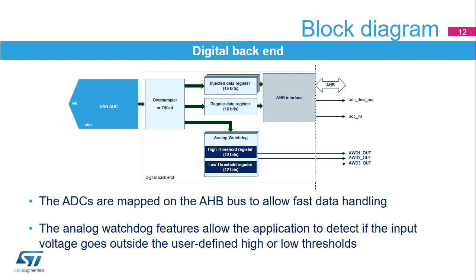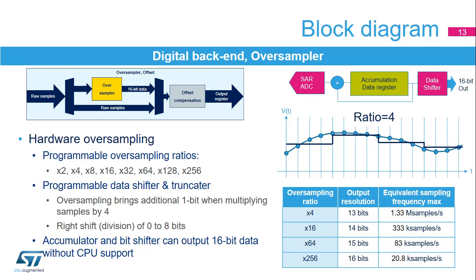Injected channels do not support DMA requests. The ADC includes the oversampling hardware, which accumulates data and then divides without CPU assistance. The oversampler can accommodate from 2 to 256 time samples and right-shift from 1 to 8 binary digits. 12-bit data can be extended to be presented as 16-bit data. This functionality can be used as an averaging function or for data rate reduction and signal-to-noise ratio improvement, as well as for basic filtering.